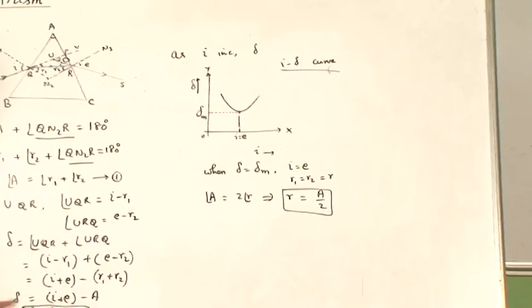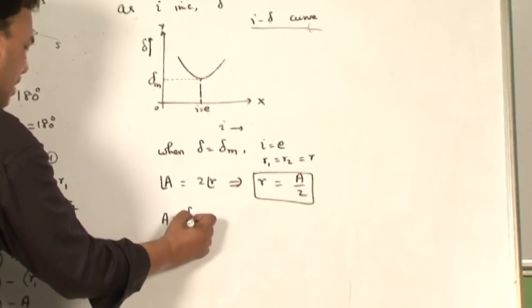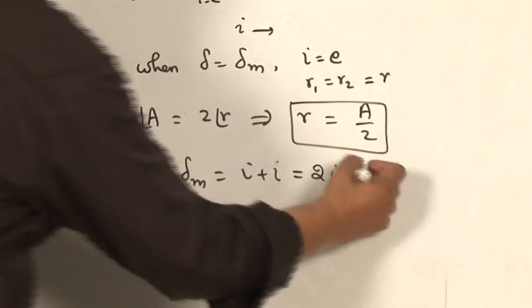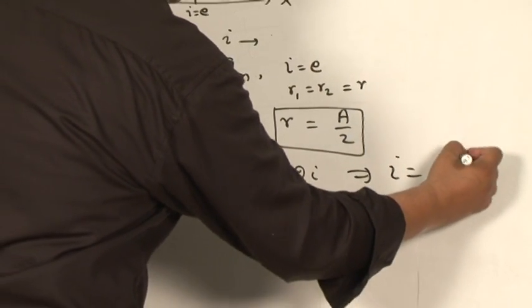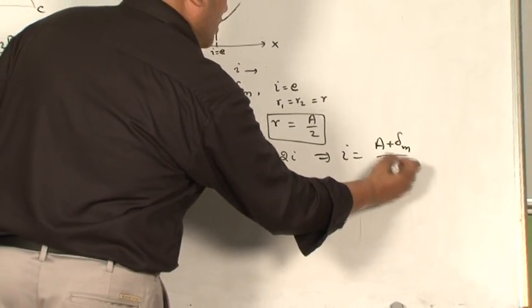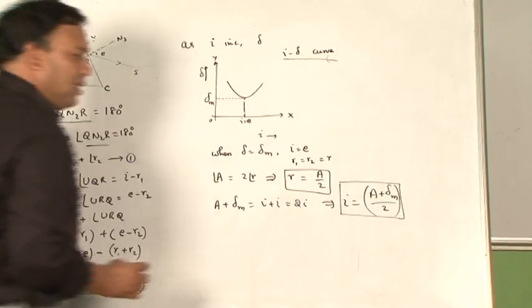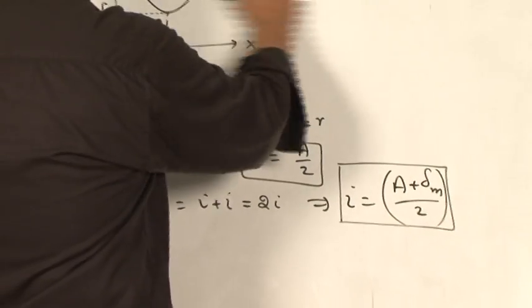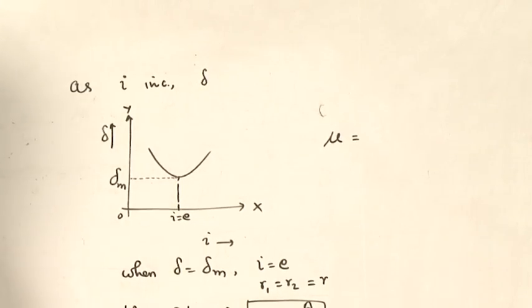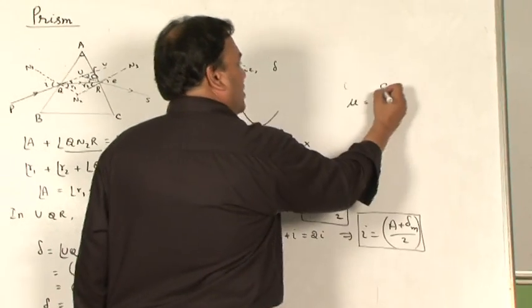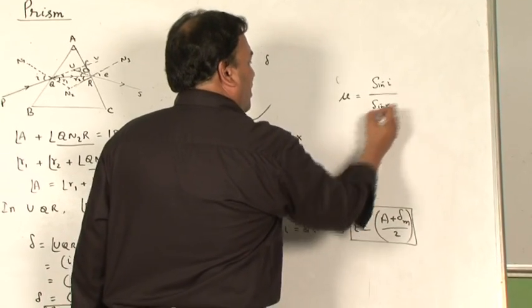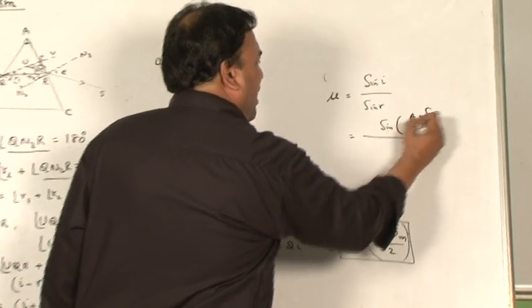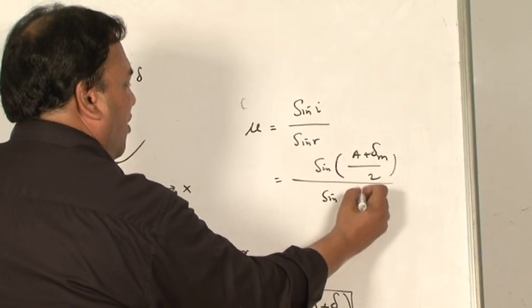From equation number 2: A plus δM equals i plus e equals 2i. This gives angle i equals (A plus δM)/2. So I have obtained the angle of incidence and the angle of refraction. As per Snell's law, the refractive index of the material of the prism μ equals sin i upon sin R. After substituting the values of i and R, I get: μ equals sin((A plus δM)/2) divided by sin(A/2).